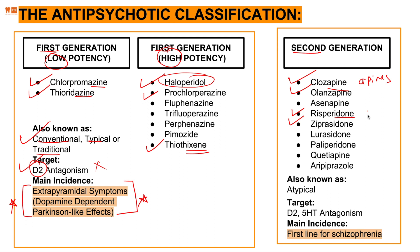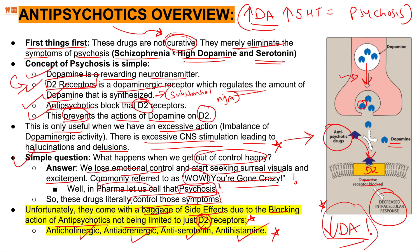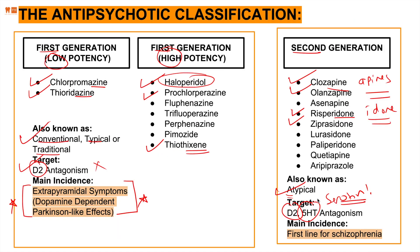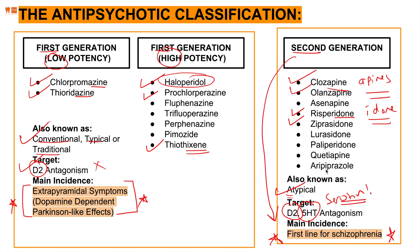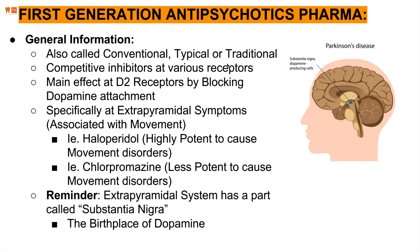Second generation antipsychotics include clozapine, olanzapine, risperidone, and ziprasidone — the '-apines' and '-idones.' These are known as atypical antipsychotics. Typically we only block D2 receptors, but these atypically also block serotonin receptors. Since schizophrenia involves both high dopamine and high serotonin, second generation antipsychotics become the first-line drugs for schizophrenia.